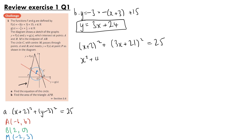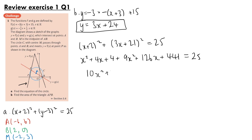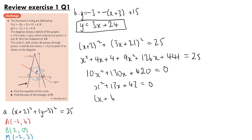Expanding gives x squared plus 4x plus 4 plus 9x squared plus 126x plus 441 equals 25. Taking all terms to the left-hand side and simplifying gives 10x squared plus 130x plus 420 equals 0, so x squared plus 13x plus 42 equals 0. Factorising gives (x plus 6)(x plus 7) equals 0, so x equals minus 6 or x equals minus 7.